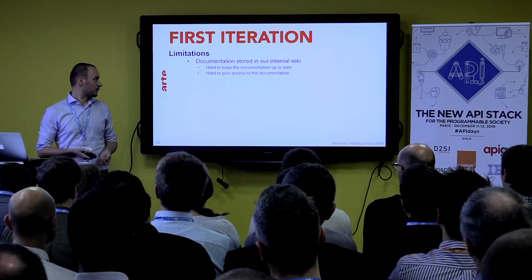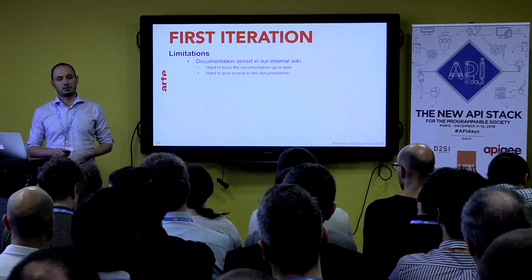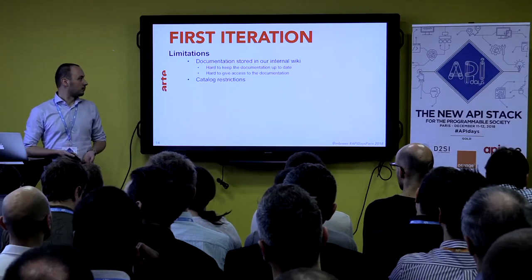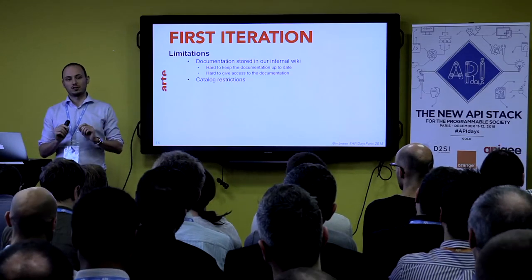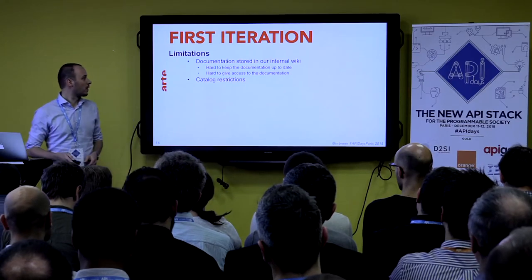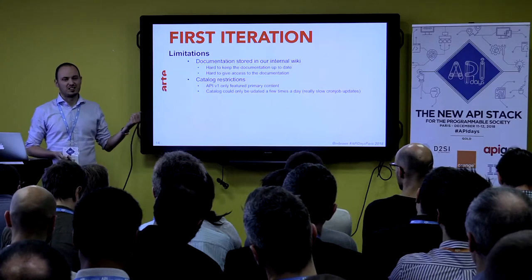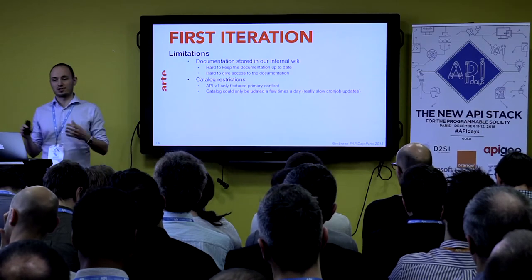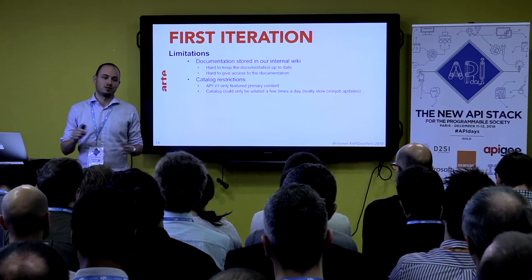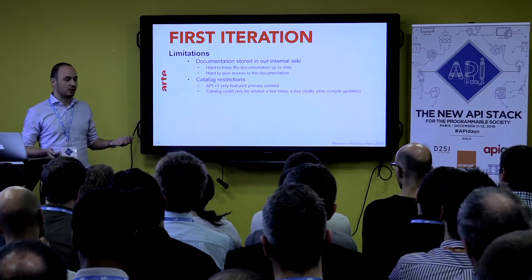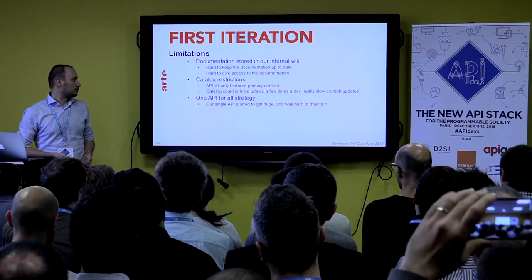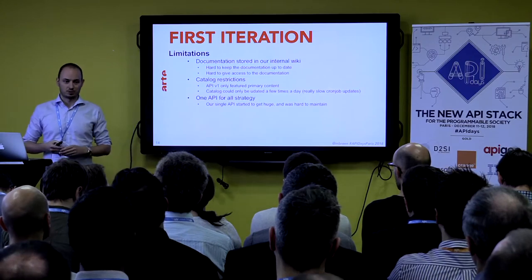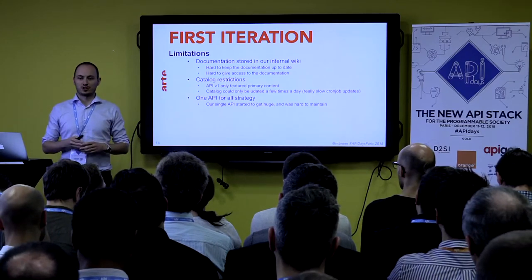Of course, there were a few limitations. The documentation was a nightmare — we had to write it down in a Wiki, just so complicated. We had catalog restrictions: we only had a portion of our catalog, not our complete video library. Our catalog was not frequently up-to-date — when an editor changed a program or title, it would take maybe four or five hours to go online, which was not really acceptable. The strategy that one API would do everything didn't really work out, because we started to have a huge API that was just complicated to manage.